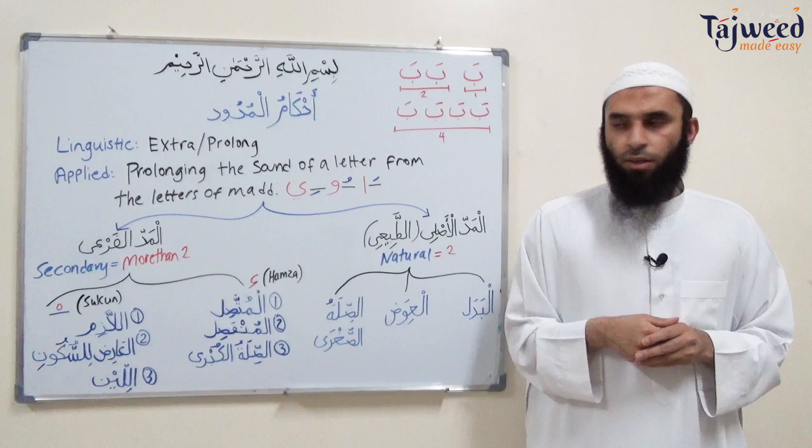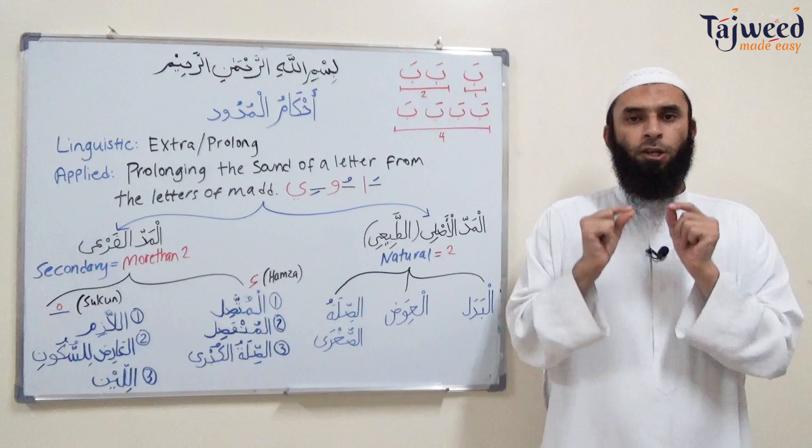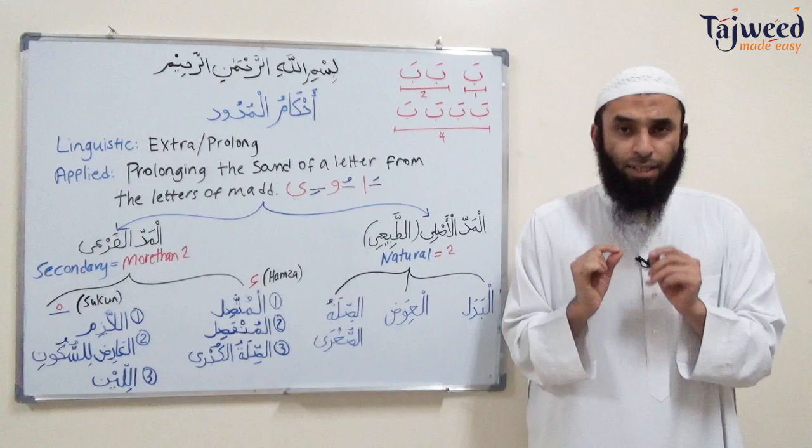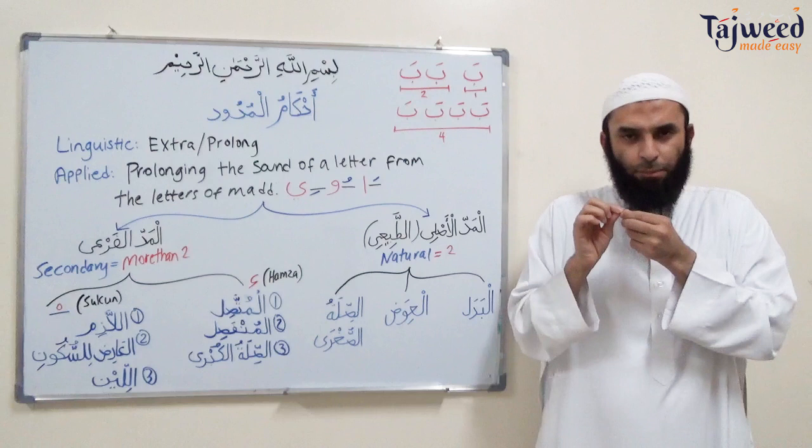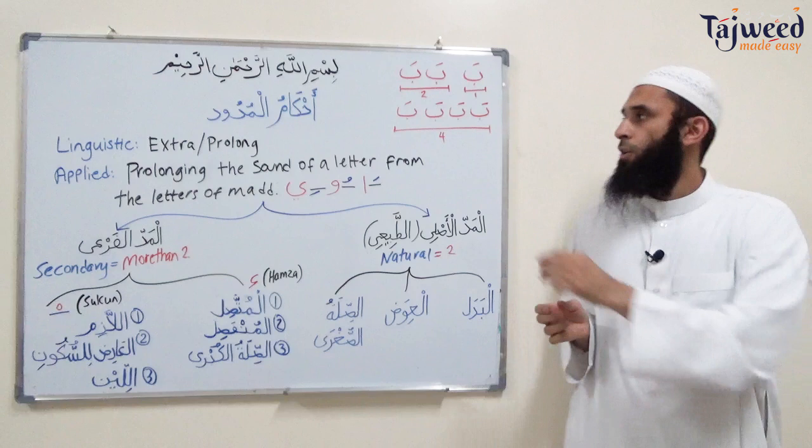So how do we measure a count? We measure a count by the time it takes us to say a letter which has a haraka — fatha, kasra, dhamma. For example, the letter ba. If I say ba, or bi, or bu — ba with a fatha, kasra, dhamma — the time it takes us to say ba, that's one count, one haraka. So one letter, the time it takes us to say one letter, that's one haraka.